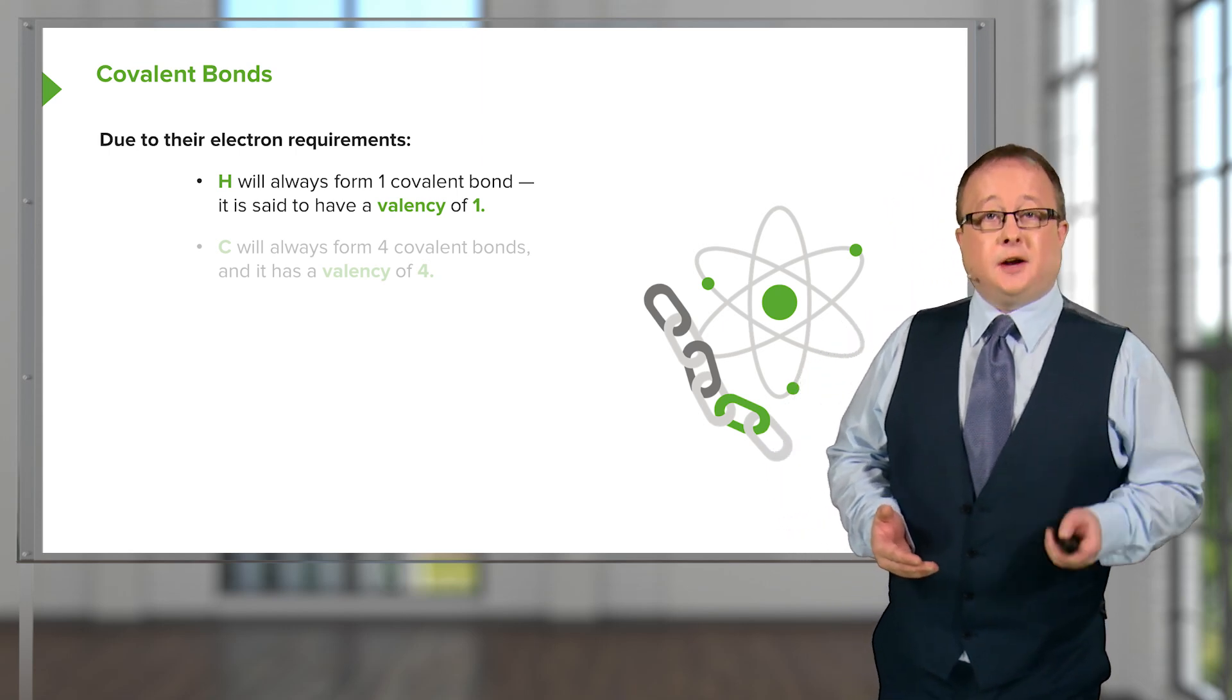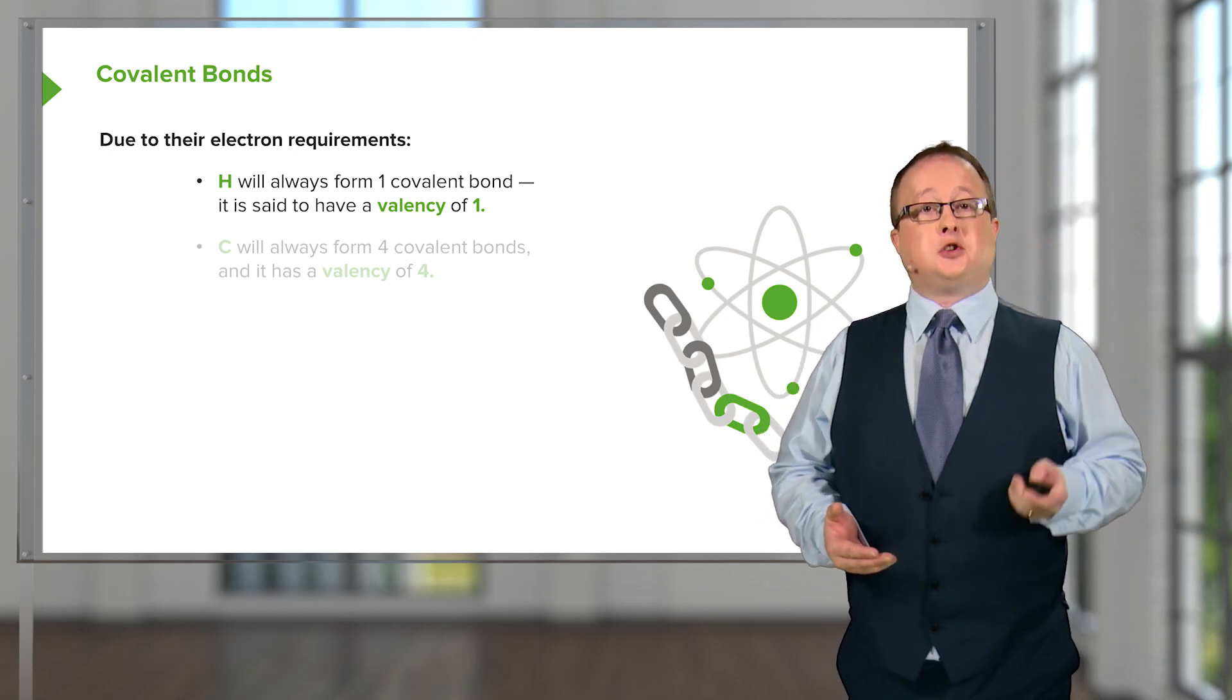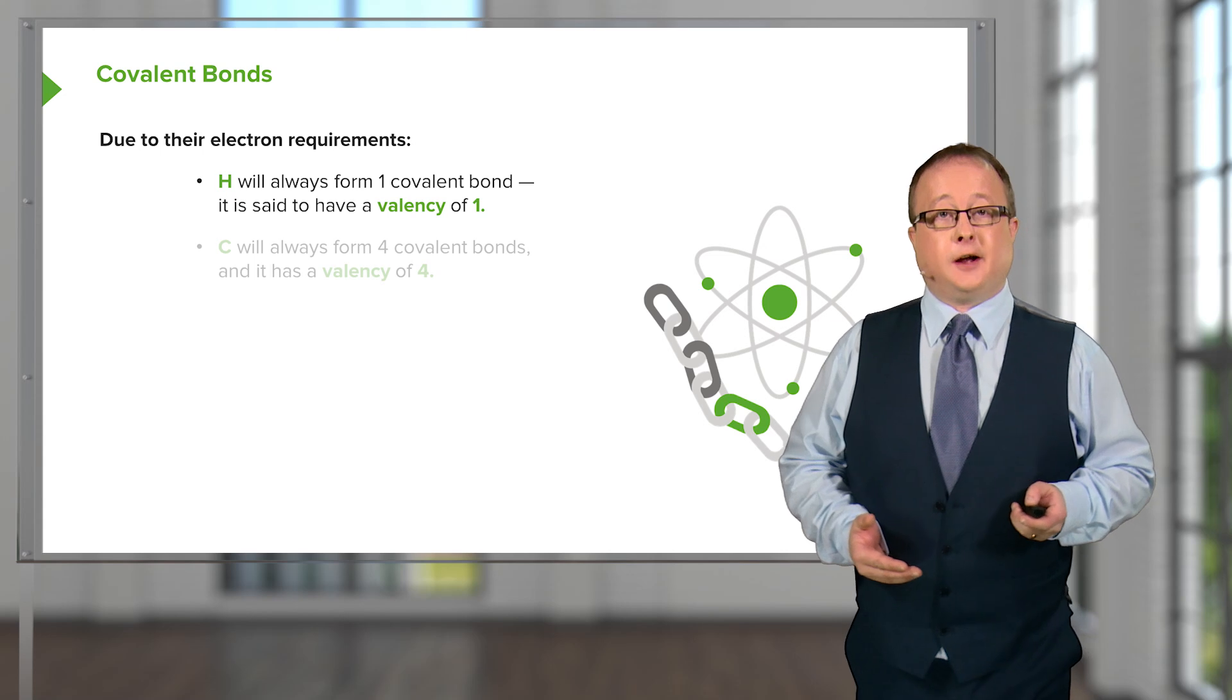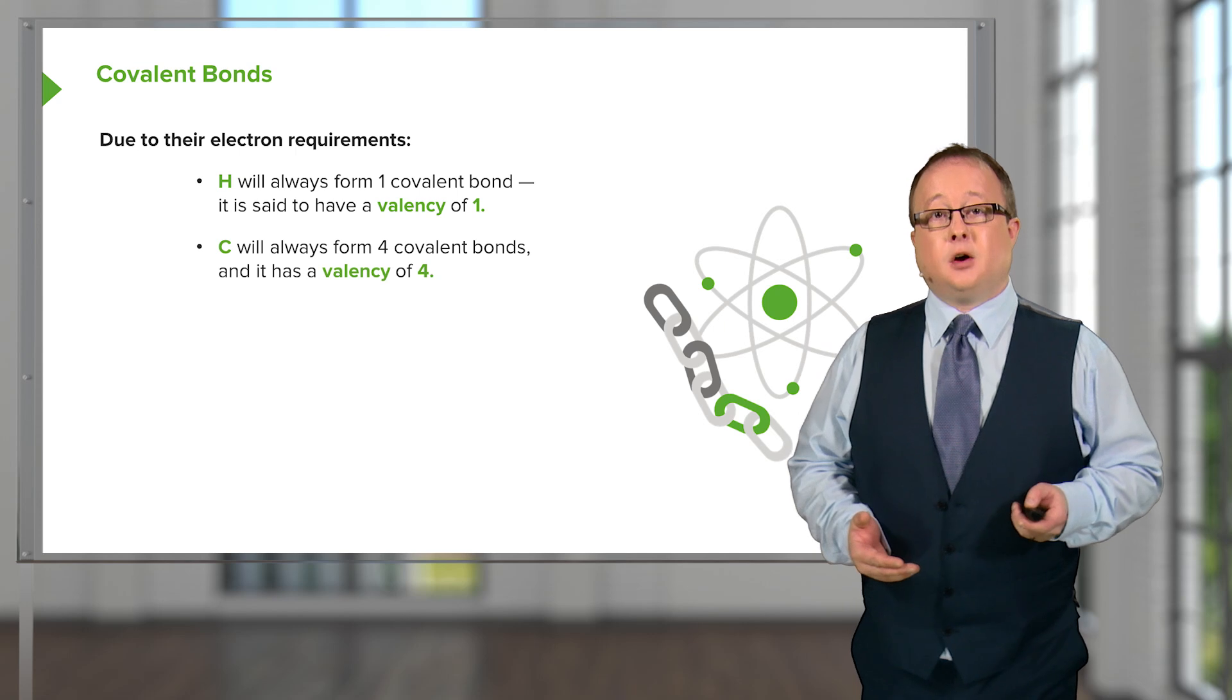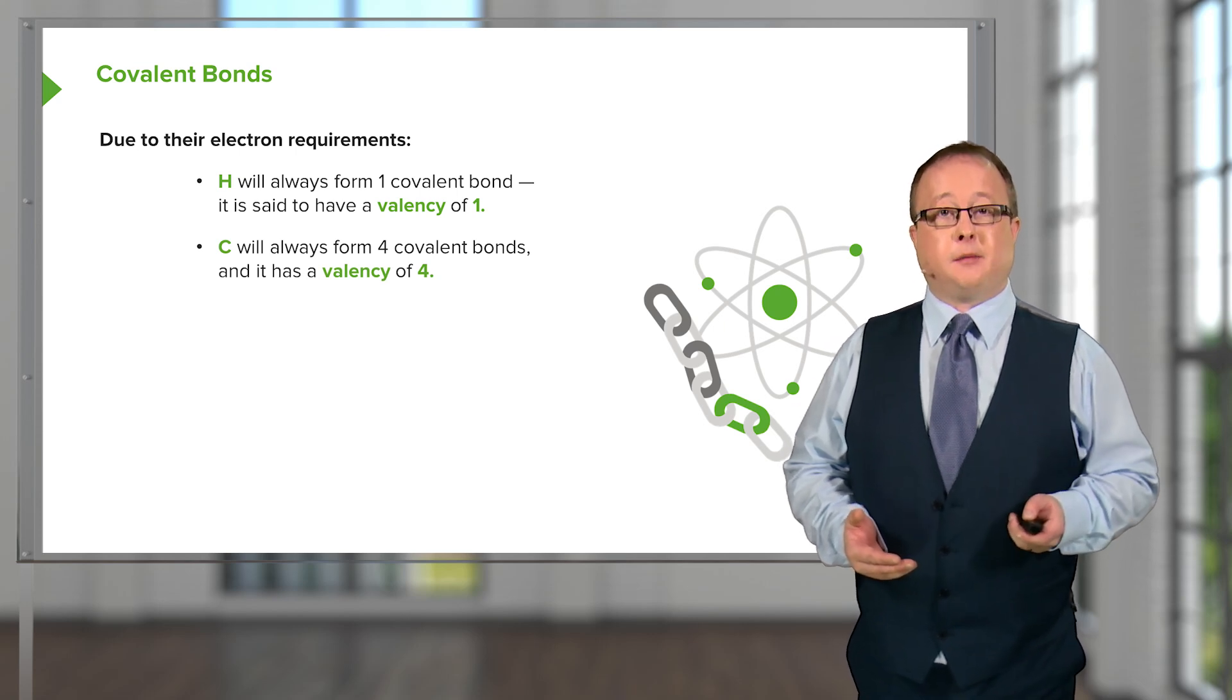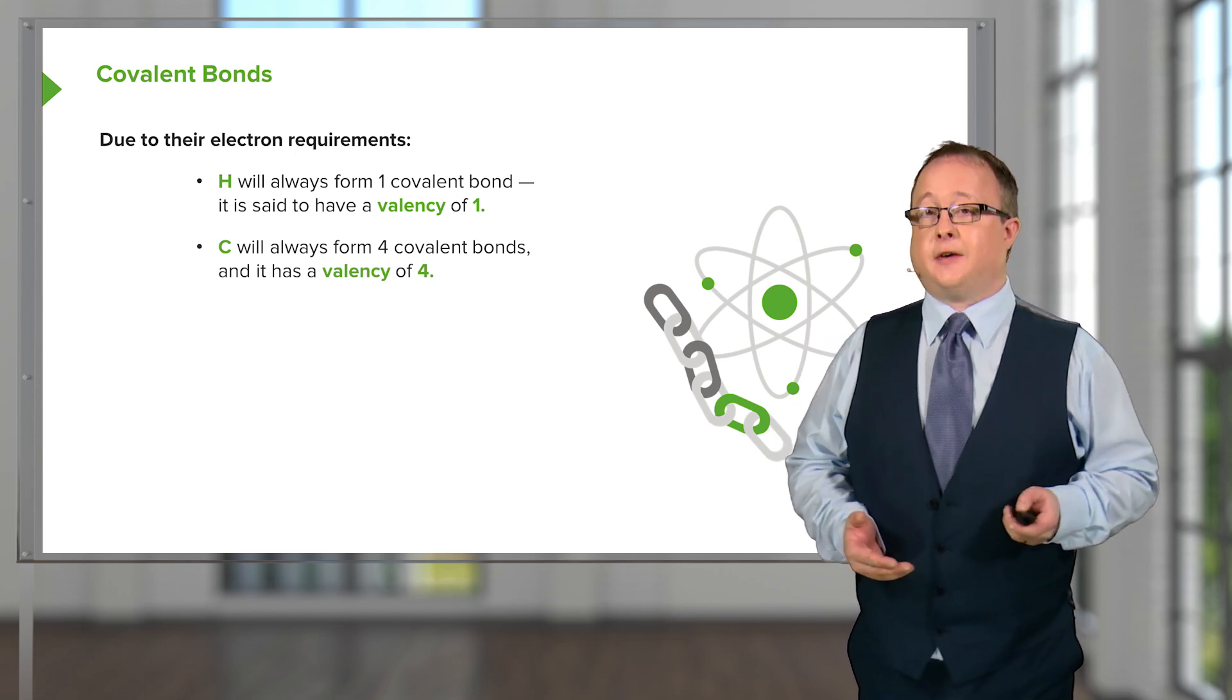So, due to their electron requirements, hydrogen will always form one covalent bond and is said formally to have a valency of one. Carbon will always form four covalent bonds and therefore has a valency of four.